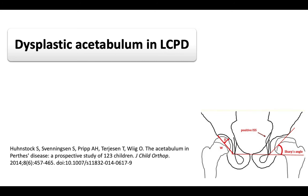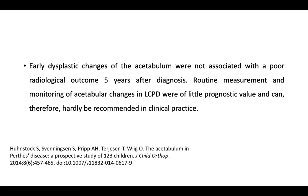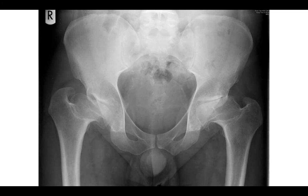Regarding acetabular dysplasia in Legg-Calvé-Perthes disease: according to Hans Tönnis and colleagues, dysplastic acetabulum develops via a primary mechanism — excessive cartilage growth caused by synovitis and hyperemia — and a secondary mechanism: femoral head deformity and lateral subluxation. They stressed that early dysplastic acetabular changes were not associated with poor radiological outcomes five years after diagnosis, and that routine measurements of acetabular changes were of little prognostic value. This x-ray shows typical significant deformity of bilateral Perthes disease: saddle-shaped flat femoral heads, aspherical on both sides, shortened femoral necks, overriding greater trochanters, and dysplastic bicompartmental acetabular surfaces on both sides.